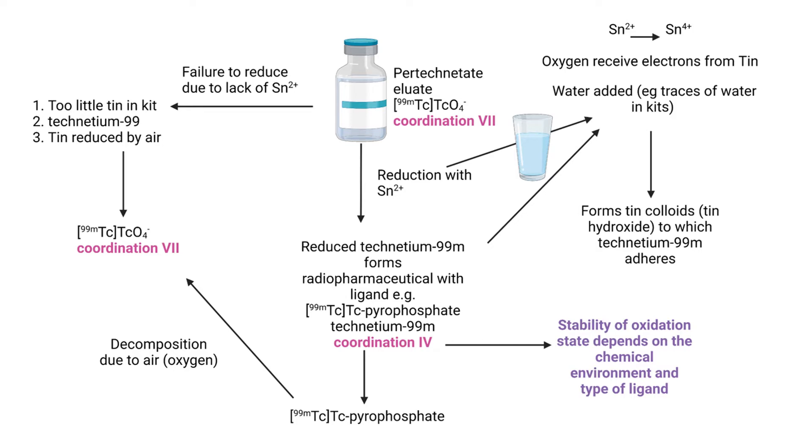This is a very complex sketch so you are more than welcome to pause and read it for yourself. But basically what we do when we label is take the eluate with the coordination state of 7, reduce it with tin to form technetium plus 4, and during this process it binds with a ligand. In the case of red blood cell labeling it will be pyrophosphate. We do not label the red blood cell with technetium plus 4, but we need the pyrophosphate to keep the molecule stable until it reaches the red blood cell.